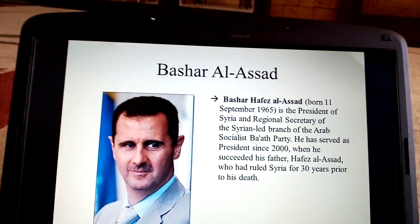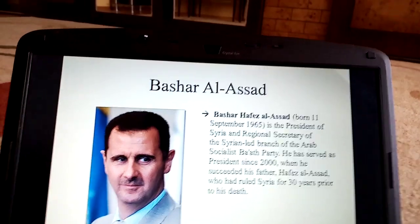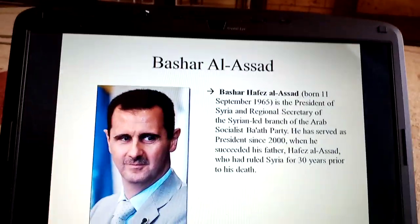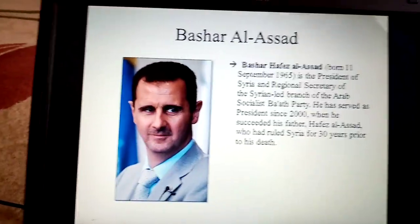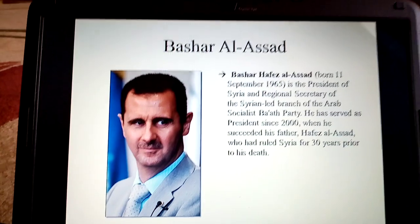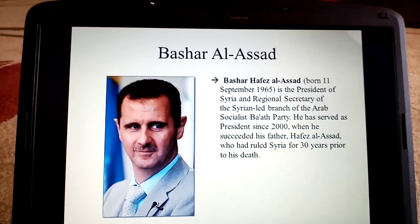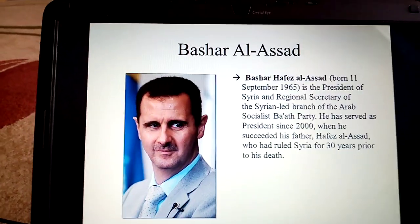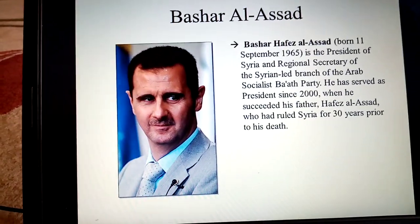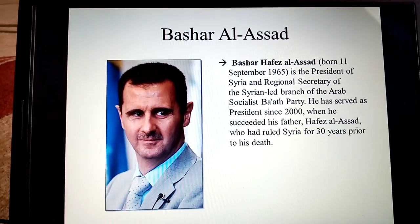Bashar al-Assad remains in power, and this is the main reason why the interests of nation states — Russia, Turkey, and especially the US — have clashed, due to the dominance and power of Bashar al-Assad, who is supported mainly by Russia. He is the President of Syria and the regional secretary of the Syrian-led branch of the Arab Socialist Ba'ath party, and has served as president since 2000, when he succeeded his father Hafez al-Assad, who had ruled Syria for 30 years prior to his death.